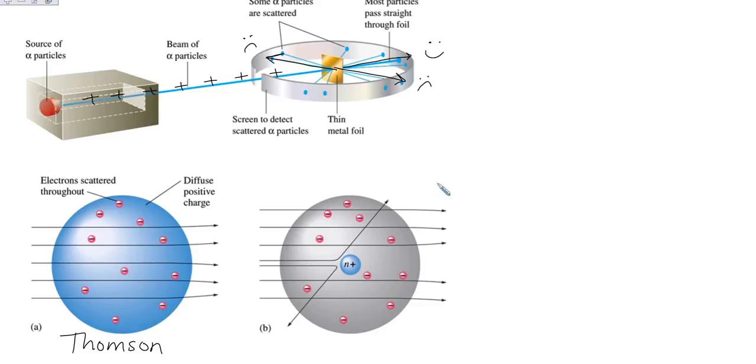And so they said, wait a second. It's as if these positive alpha particles were hitting something that's also positively charged. Likes repel. So we need to alter our atomic structure a little bit. So here's Rutherford's model.